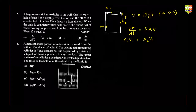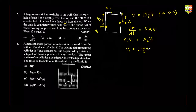The quantity of water coming out from both sides is the same. The circular hole has radius r and is at a depth 4y, while the square hole is at depth y. So v₁ = √(2gy) and v₂ = √(2g × 4y), which comes out to be 2√(2gy).